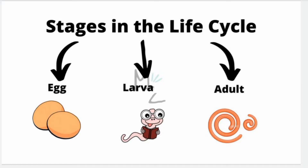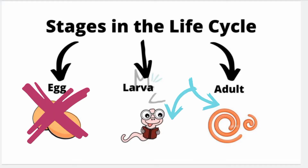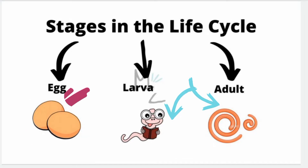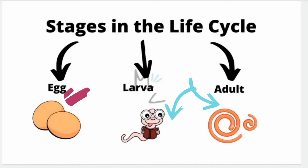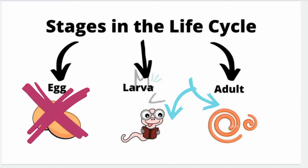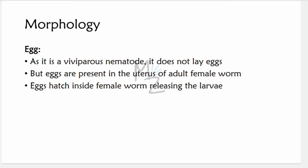Before starting morphology, note that the developmental stages in the life cycle of Trichinella spiralis include the larva and the adult — there is no free egg stage. As it is a viviparous nematode, it does not lay eggs freely; eggs are present within the uterus of the female worm and hatch inside the female, releasing larvae.